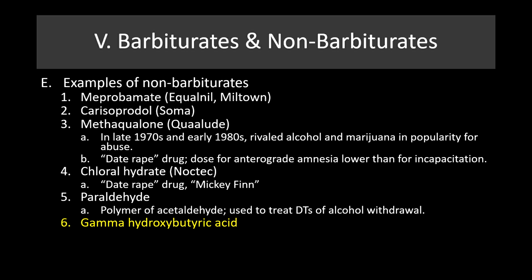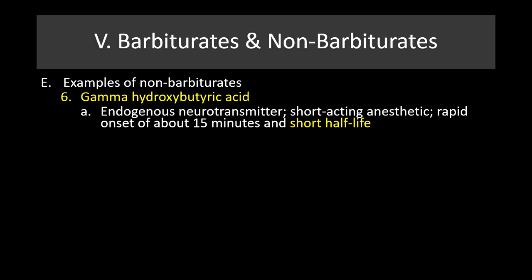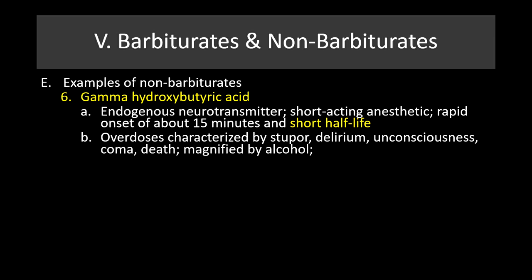More commonly used in a modern context is gamma-hydroxybutyric acid, or GHB. GHB is an endogenous neurotransmitter and a short-acting anesthetic with a rapid onset of about 15 minutes and a very short half-life. This drug was available at places like GNC because it actually promotes muscle development, but it is also very dangerous. Overdoses are characterized by stupor, delirium, unconsciousness, coma, and death, and these effects are greatly magnified by alcohol. GHB should never be used in combination with alcohol — that is a particularly dangerous combination.